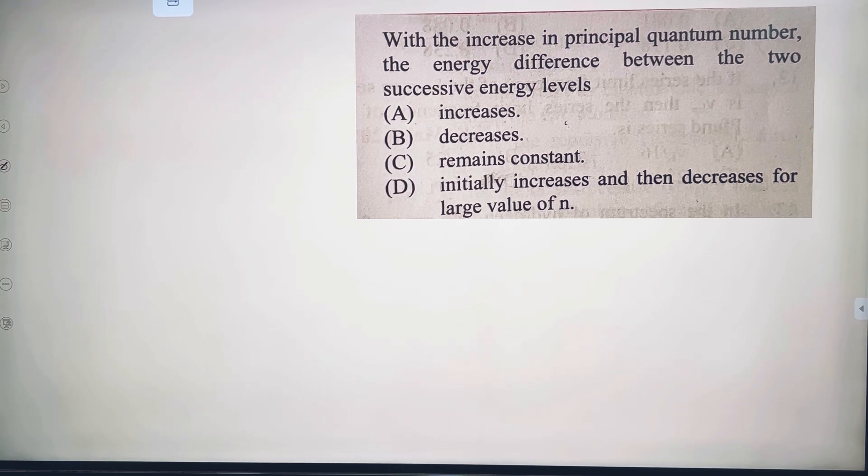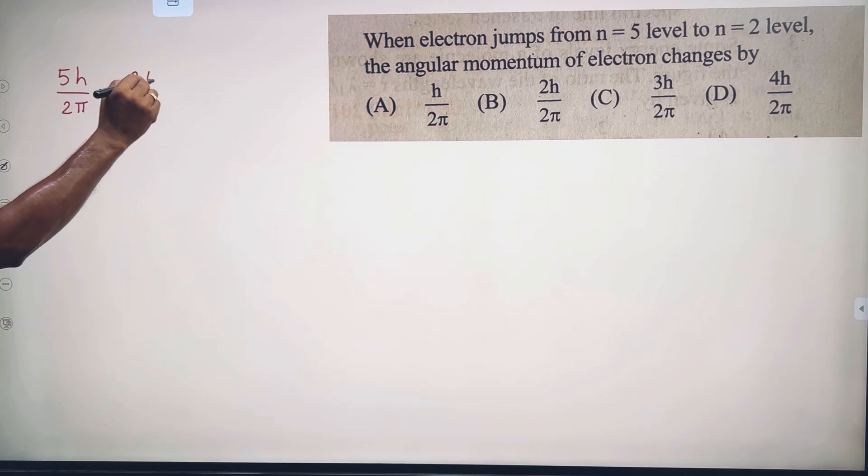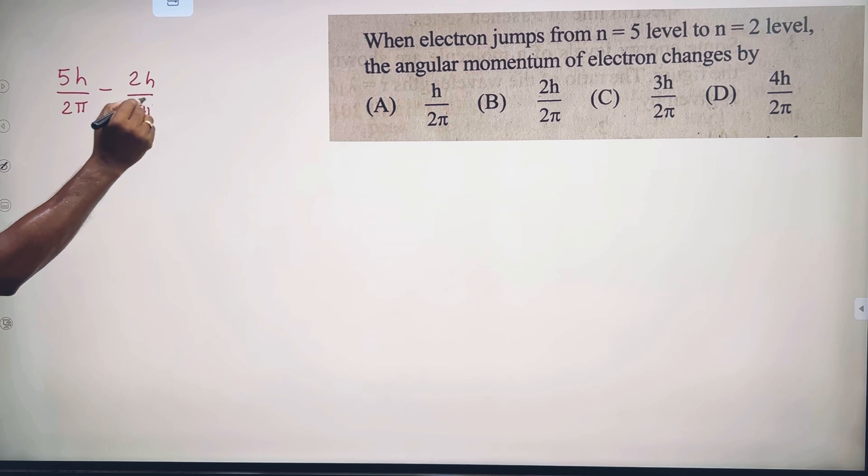When the electron jumps from n equals 5 level to n equals 2 level, the angular momentum of electron changes by the difference: 5 h-bar minus 2 h-bar equals 3 h-bar, which is 3h over 2 pi. Option C.